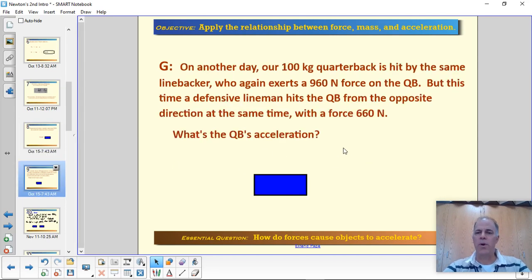Now we have the same quarterback, he's still 100 kilograms. He's hit by the same linebacker who again exerts 960 newtons of force. But this time, a defensive lineman hits the quarterback from the opposite direction with a force of 660 newtons. And again, we want to know the quarterback's acceleration. So this time, we have to take into account the net force and keep track of what direction we're talking about. Are these two forces going to combine to create a larger force or are they going to cancel each other out to some degree? They are coming from opposite directions.